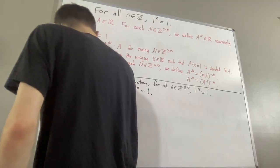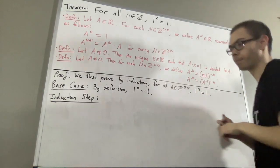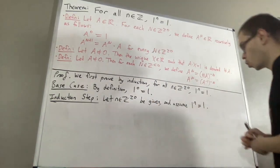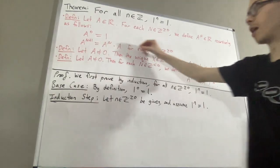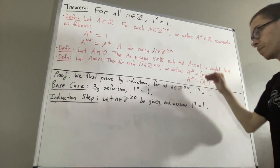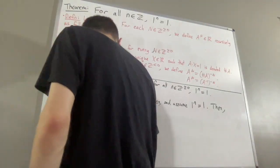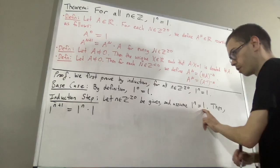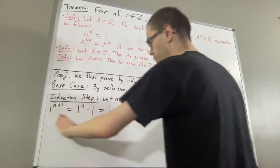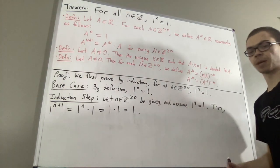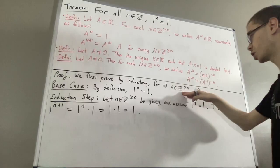Now, let's move on to the induction step. In the induction step, we give ourselves an arbitrary non-negative integer n, and we assume 1 to the power of n is equal to 1. The goal of the induction step is to establish 1 to the power of n plus 1 is equal to 1. According to the second part of our definition for non-negative integer exponents, 1 to the power of n plus 1 is equal to 1 to the power of n times 1. But then, 1 to the power of n is equal to 1 by our induction hypothesis. So, this is just 1 times 1, which is equal to 1. This completes the induction step. By mathematical induction, we have proven for every non-negative integer n, 1 to the power of n is equal to 1.